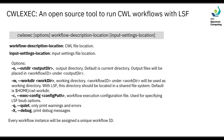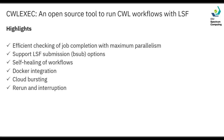The parameters include the output directory and the working directory. We have a new parameter called execconfig that I will talk about in more detail soon. When you run CWL exec, you will get a unique workflow ID, which you can use later to query the workflow status or to rerun the workflow. I will now talk about more details of the features in CWL exec: efficient job completion checking with maximum parallelism, LSF submission options support, self-healing of workflows, Docker integration, cloud bursting, and how to rerun and interrupt a CWL workflow.